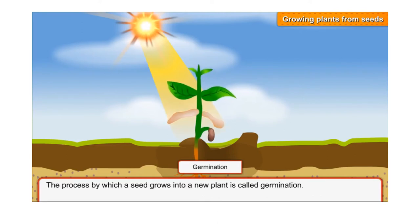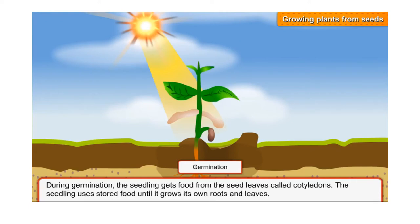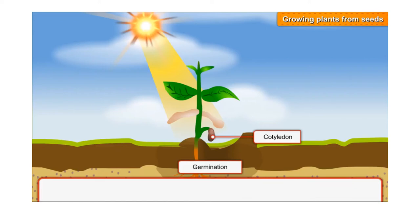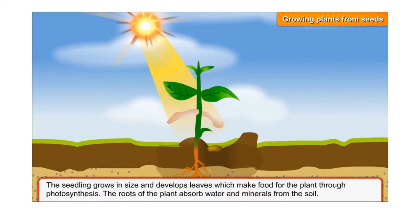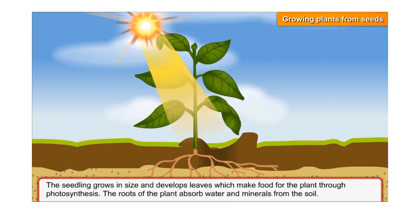The process by which a seed grows into a new plant is called germination. During germination, the seedling gets food from the seed leaves called cotyledons. The seedling uses stored food until it grows its own roots and leaves. After the food stored in the cotyledons has been used, they shrink and fall off. The seedling grows in size and develops leaves, which make food for the plant through photosynthesis. The roots of the plant absorb water and minerals from the soil.